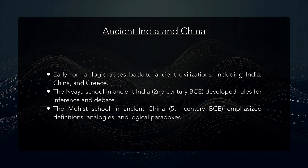The development of formal logic has a rich and varied history spanning several millennia and numerous cultures. The roots of formal logic can be traced back to ancient civilizations, with early examples found in the works of Indian, Chinese, and Greek philosophers. In ancient India, the Nyanya school of philosophy, founded around the 2nd century BCE, developed a sophisticated system of logic that included rules of inference and debate. In ancient China, the Moes school, active around the 5th century BCE, contributed to logical thought with its emphasis on definitions, analogies, and logical paradoxes.